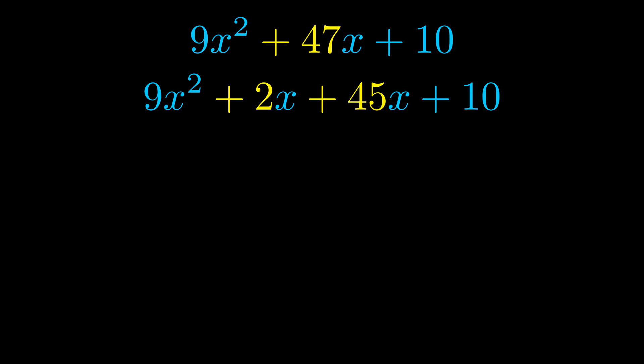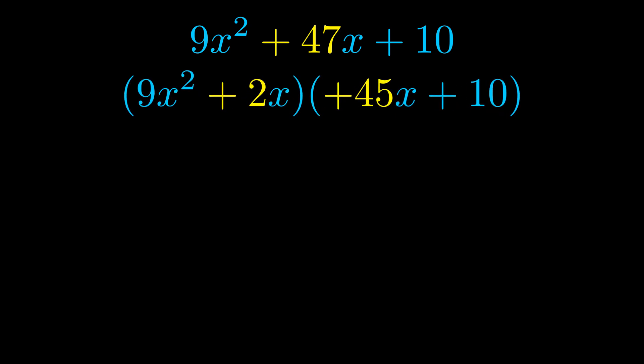Once we've done this we go ahead and we put parentheses around the first term and the last term. And we do that so that we can take the greatest common factor out of both terms. We can see the greatest common factor is now outside in green. Notice also how what remains inside of the parentheses is the same in both cases.